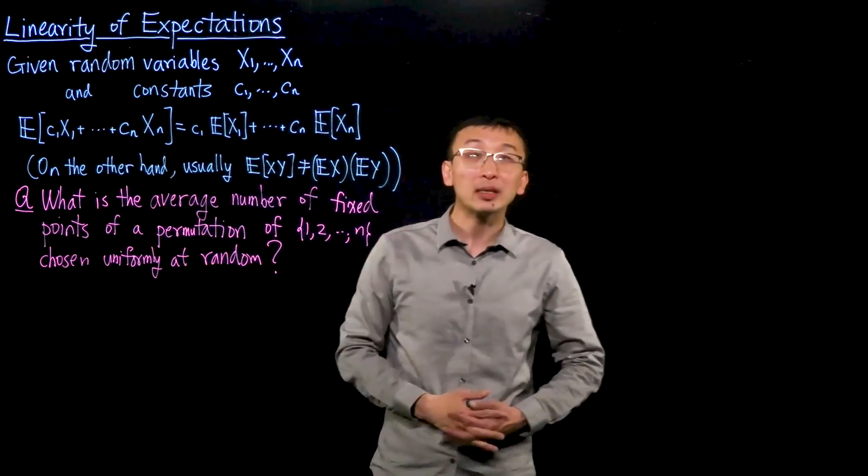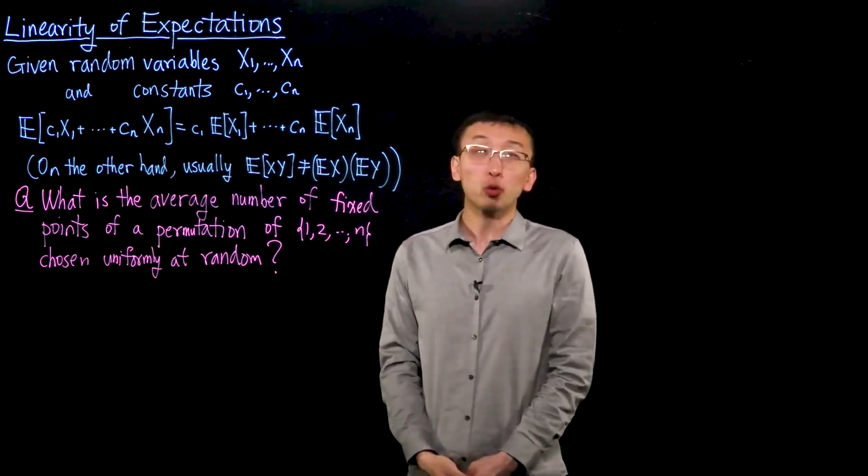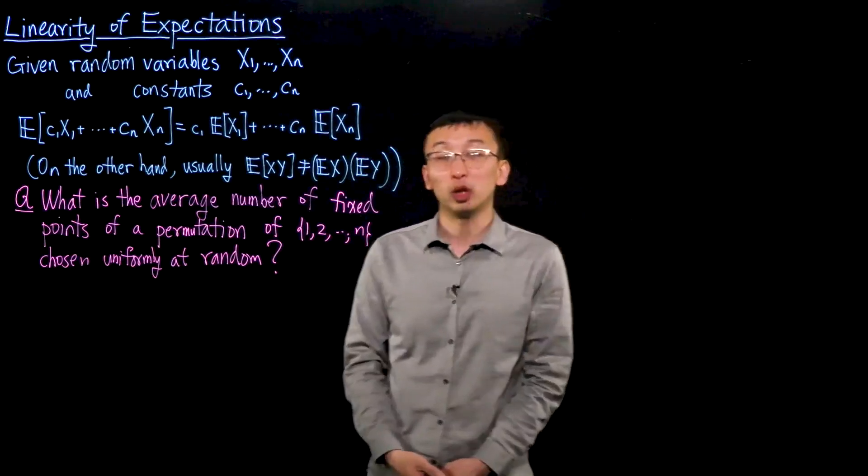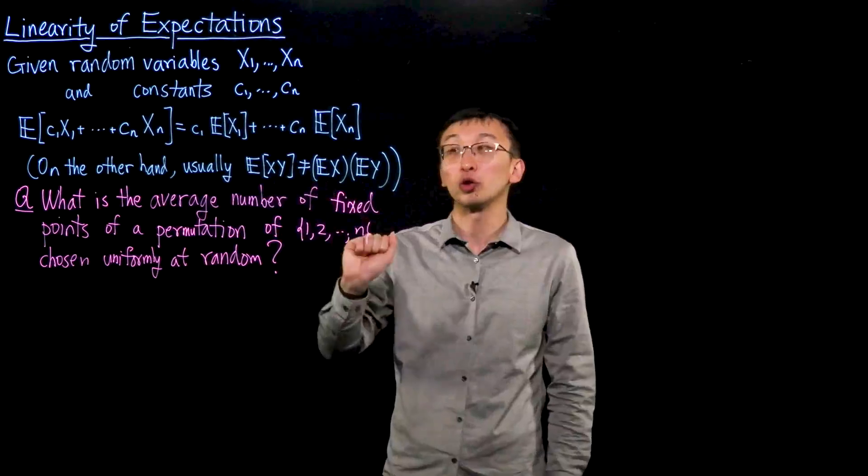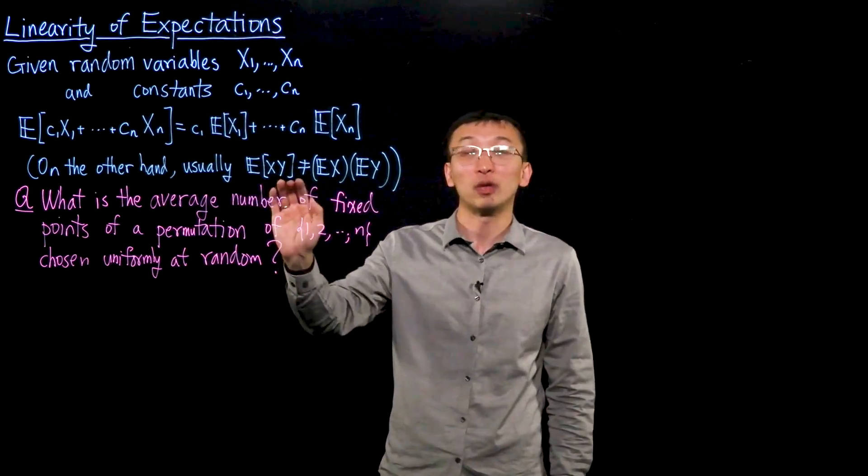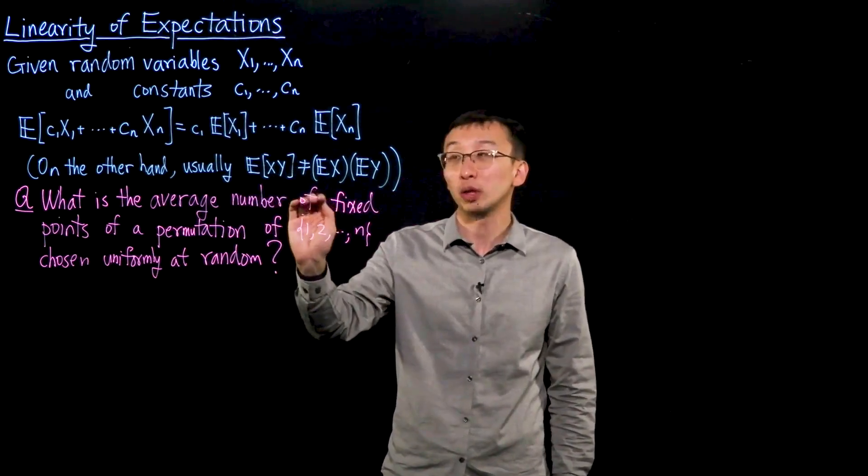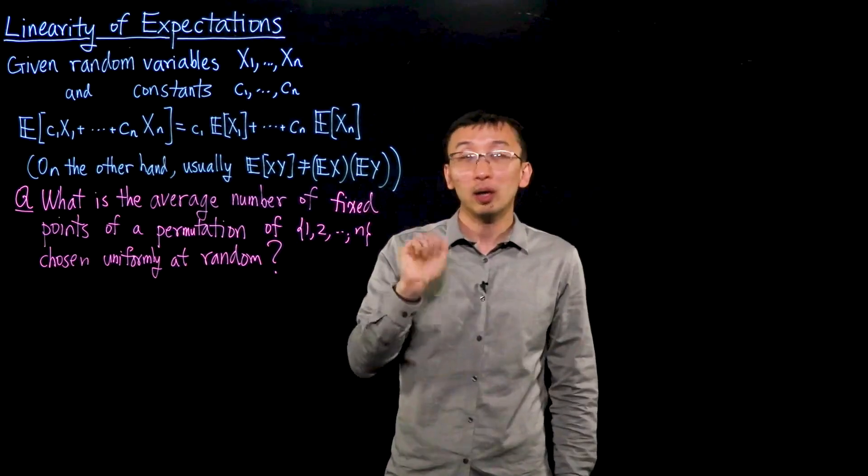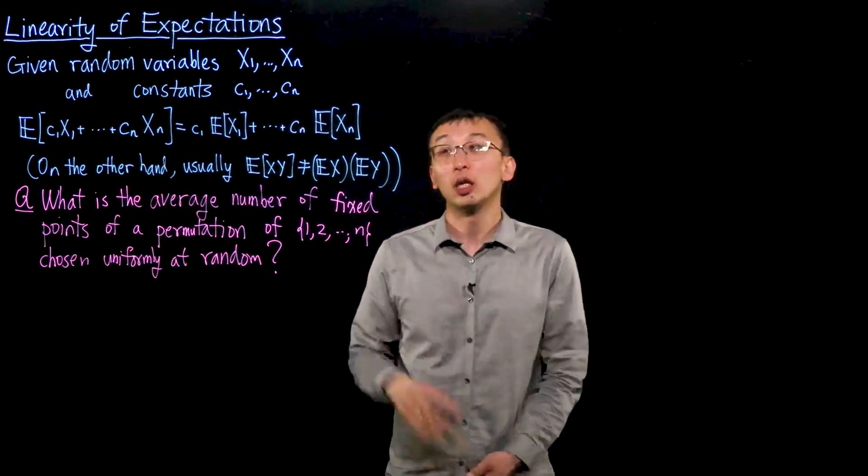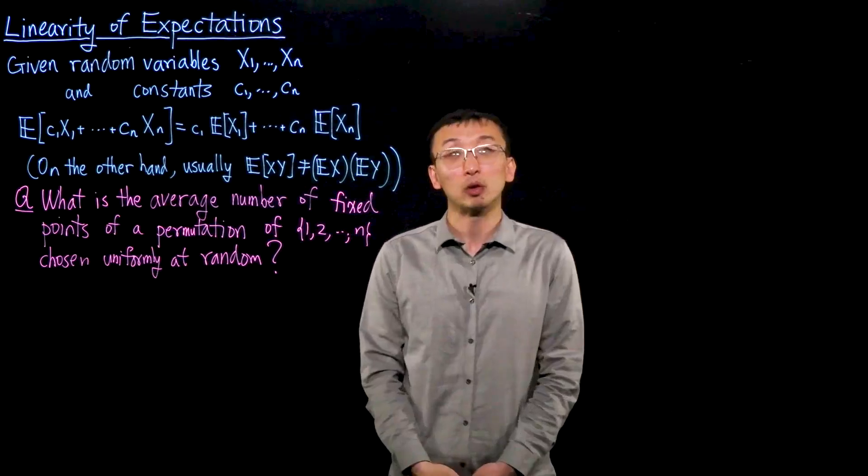So this is a basic and important property. And it's worth noting that a similar statement written for products is often not true. It is not usually the case that the expectation of a product of two random variables is the product of their expectations, unless you are in special circumstances such as when x and y are independent or uncorrelated.